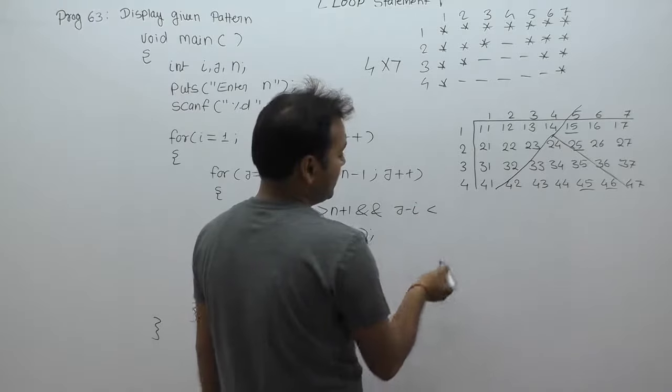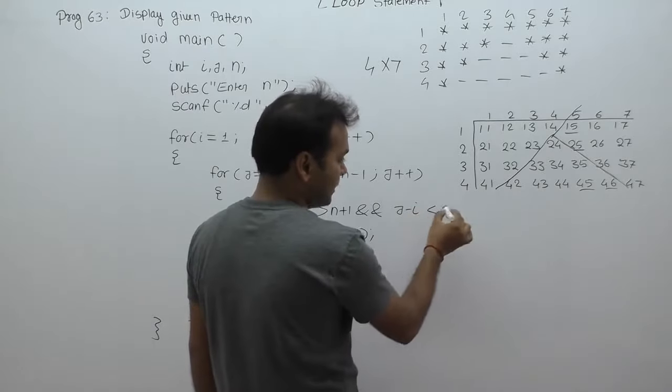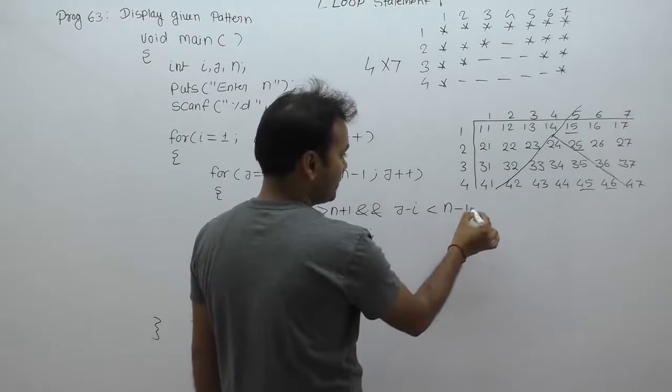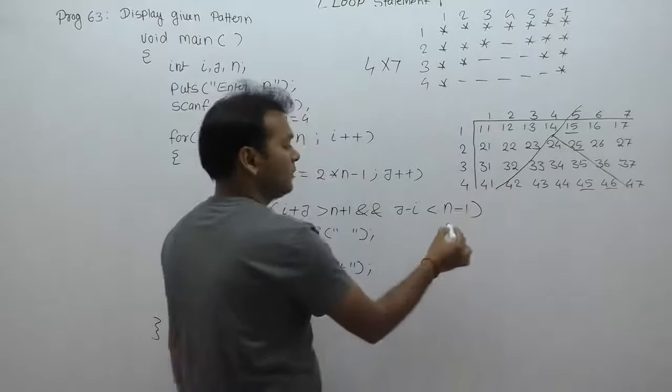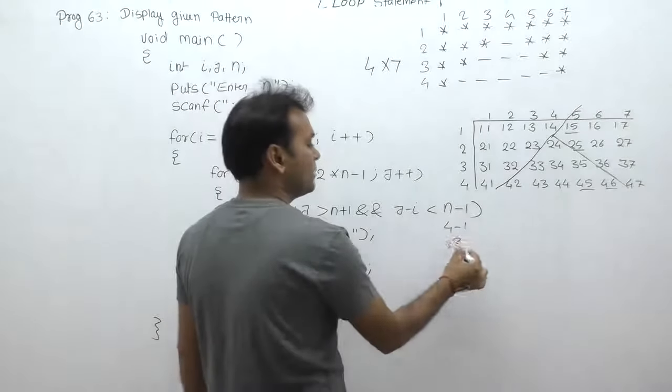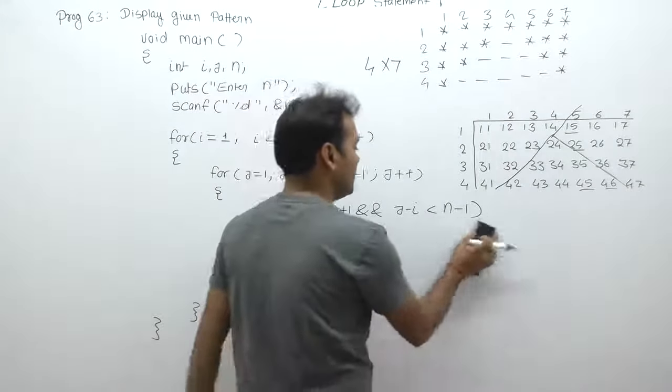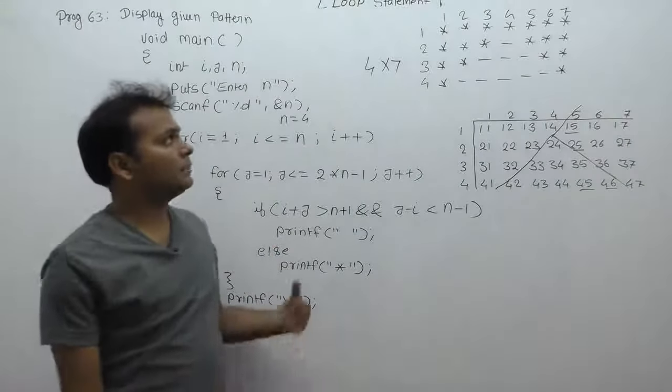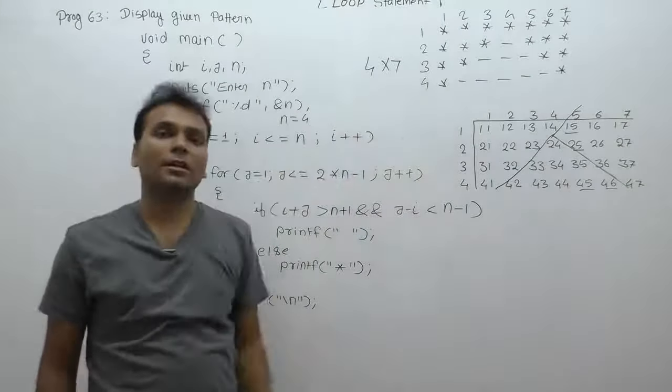In this case, j minus i less than 3 becomes n minus 1. This is similar to 3. With these conditions for the order, the required pattern is possible.